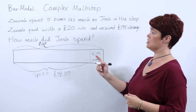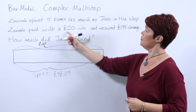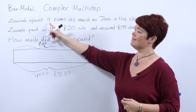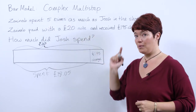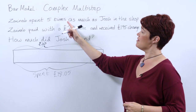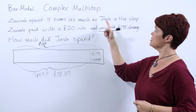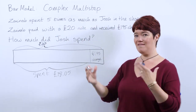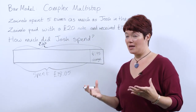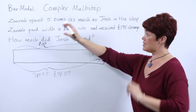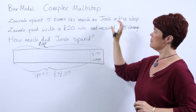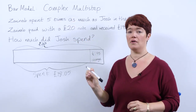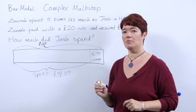Now going back to the question, we've used the bits we know, but this first part we haven't used yet: Zainab spent five times as much as Josh. Using that inverse relationship, Zainab spent five times as much means Josh spent a fifth of what Zainab spent.